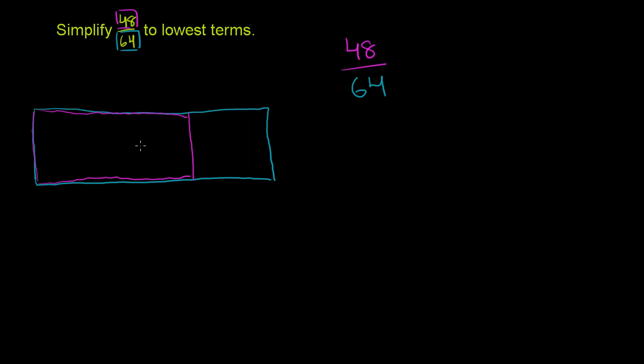Now, is there a way to group these 48 or these 64 into groups of numbers that will maybe simplify them a little bit? And to think about that, you'd have to think about what is the largest factor that is common to both 48 and 64? Or you could think of it as what is their greatest common divisor.